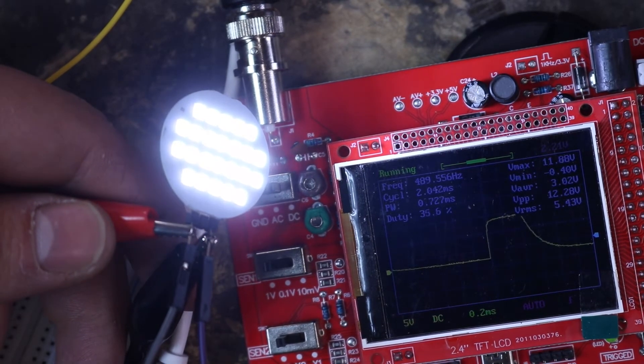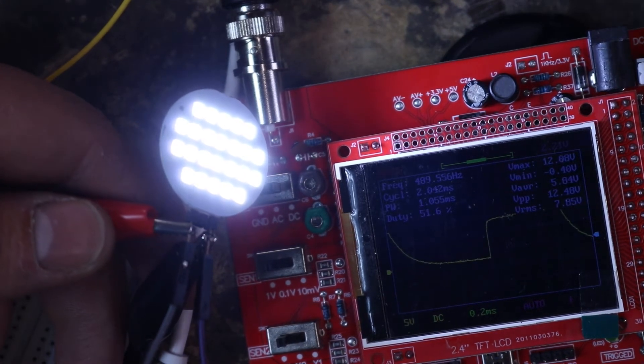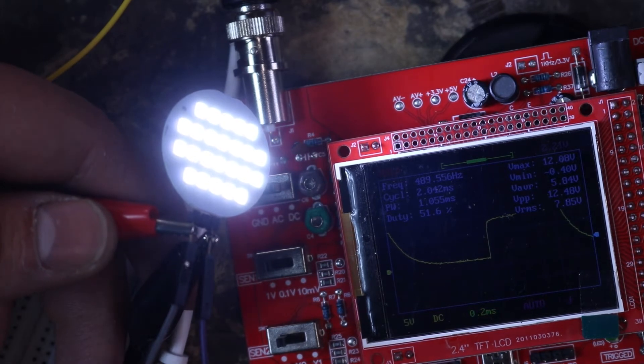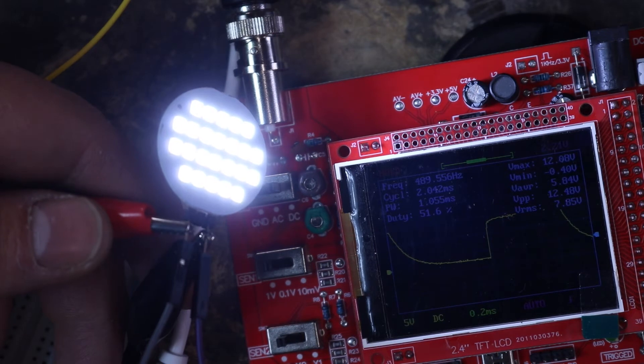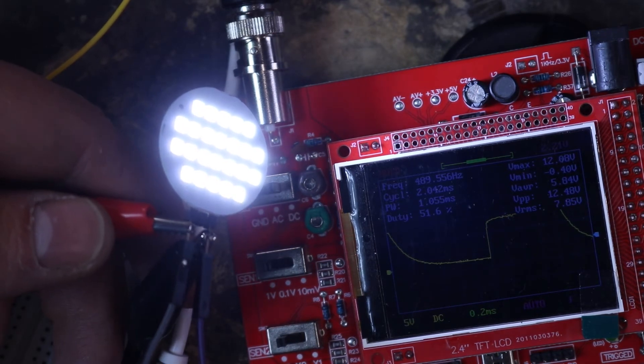Okay, now let's continue and go to a 50% duty cycle. As you can see, the LED bulb again gets a little bit brighter. You can see that the voltage going towards the bulb right now is averaging about 5.84 volts.